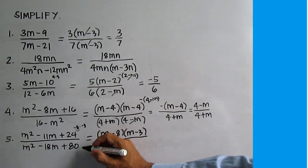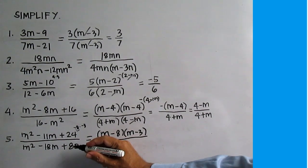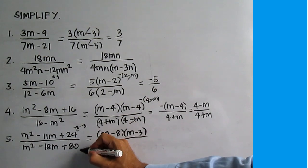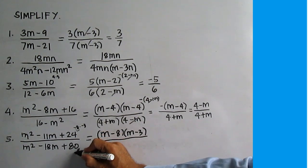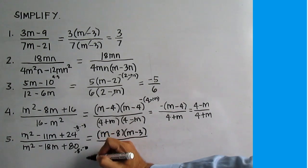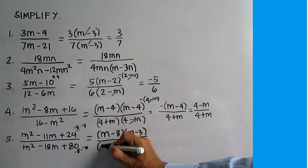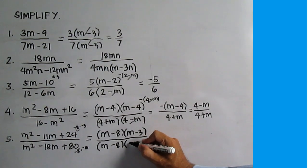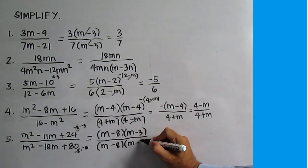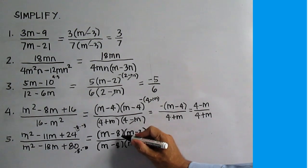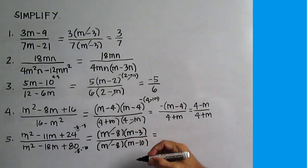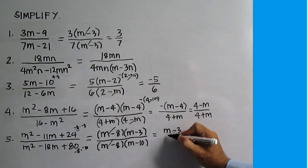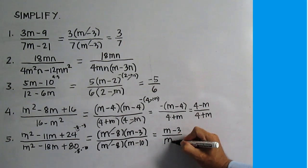For the denominator, think of two numbers that will give you a product of 80 and a sum of negative 18: negative 8 and negative 10. The factors are M minus 8 and M minus 10. Note that M minus 8 is a common factor. Divide. The answer is M minus 3 over M minus 10.